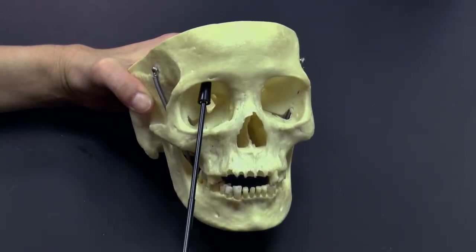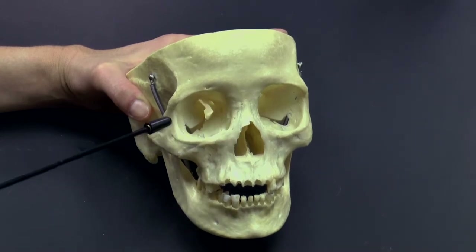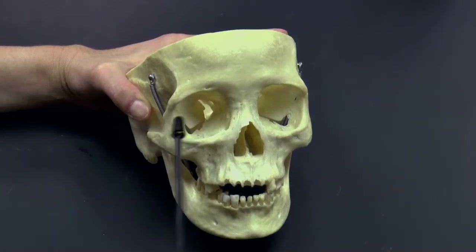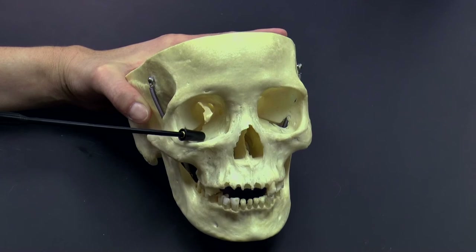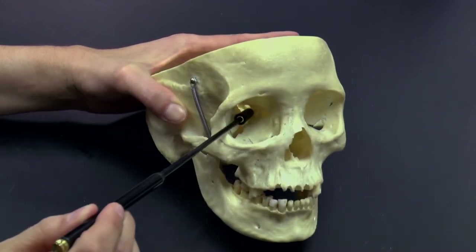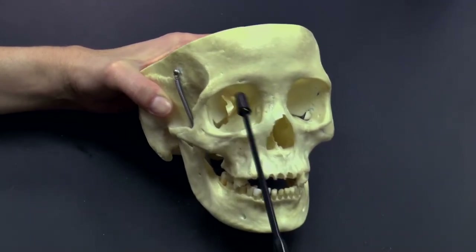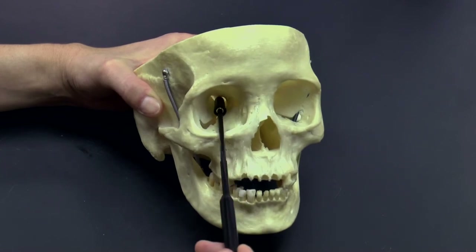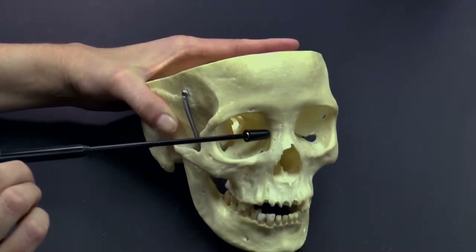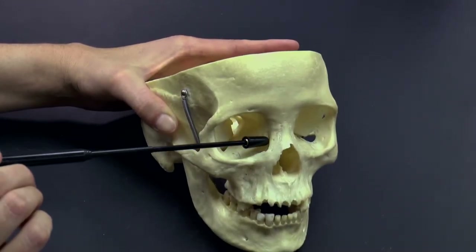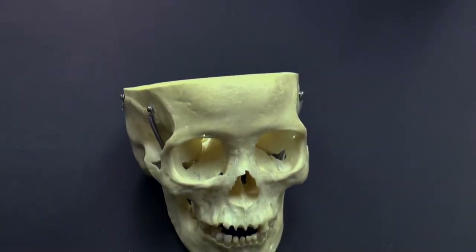To review those bones once more: here we have the frontal bone, the zygomatic bone, the maxilla bone, the ethmoid bone, the sphenoid bone at the back of the eye, and the lacrimal bone. We'll see you next time.